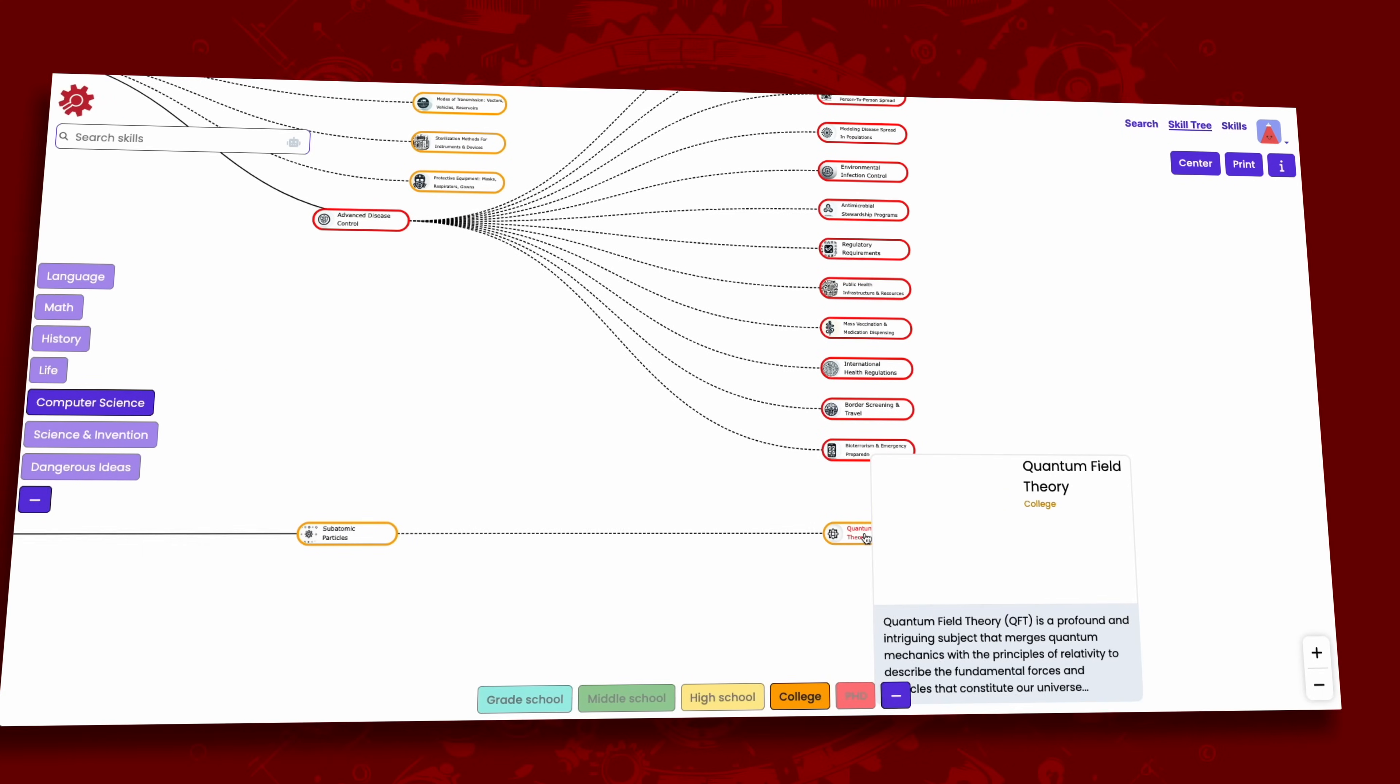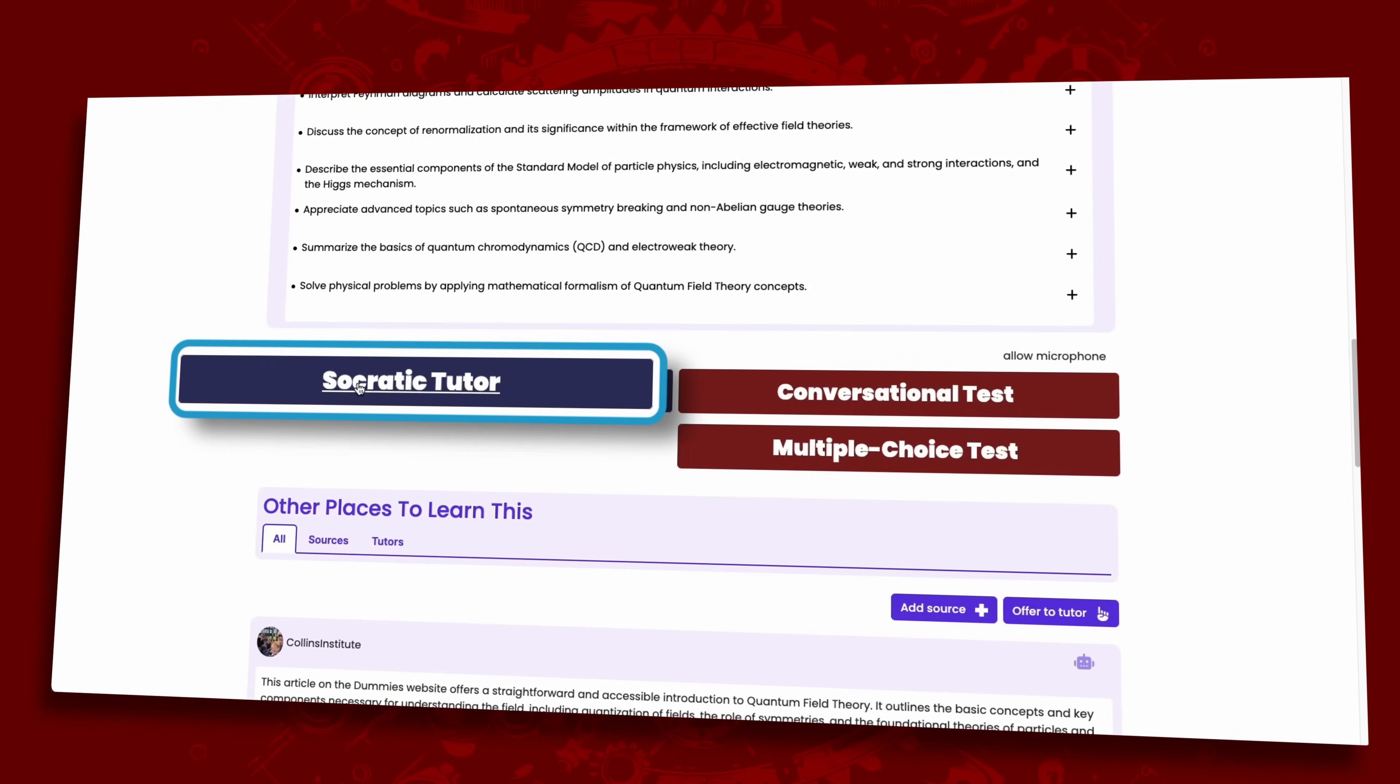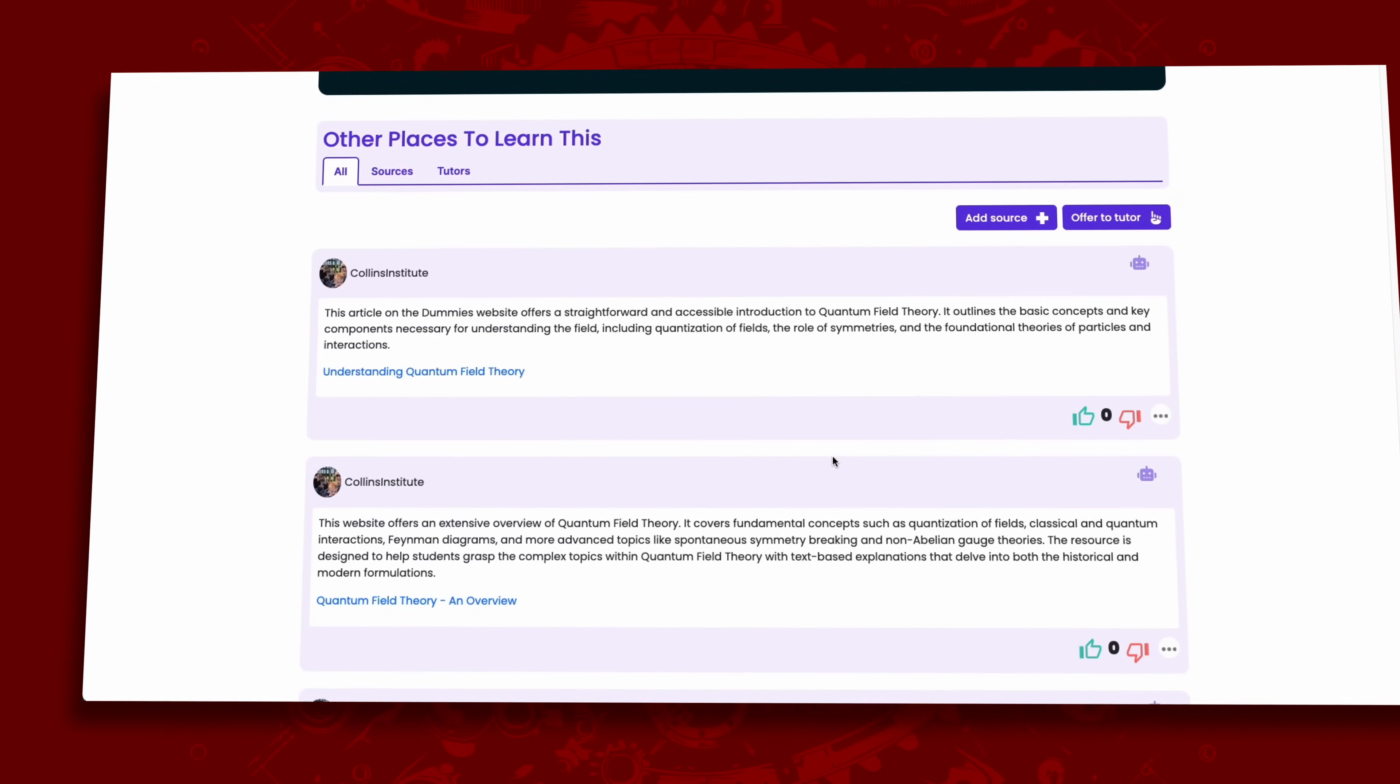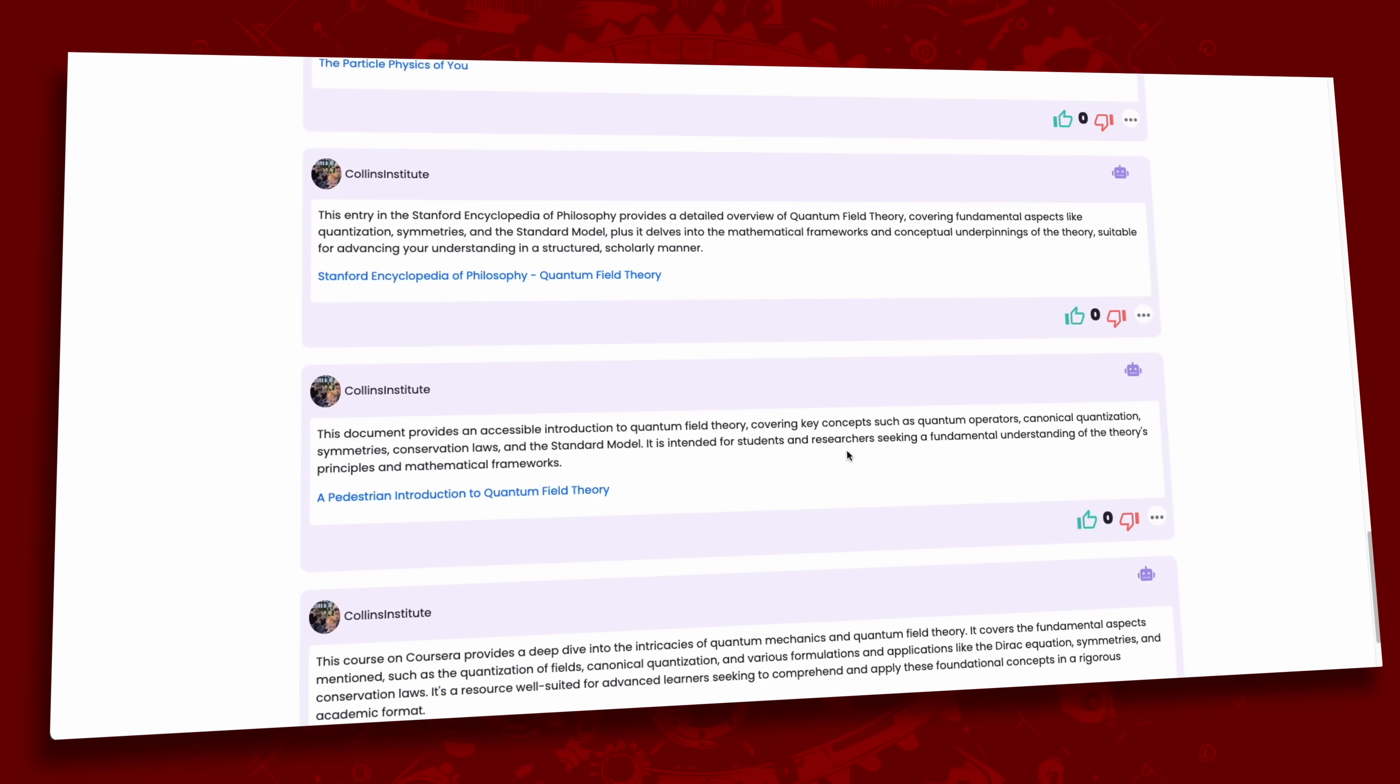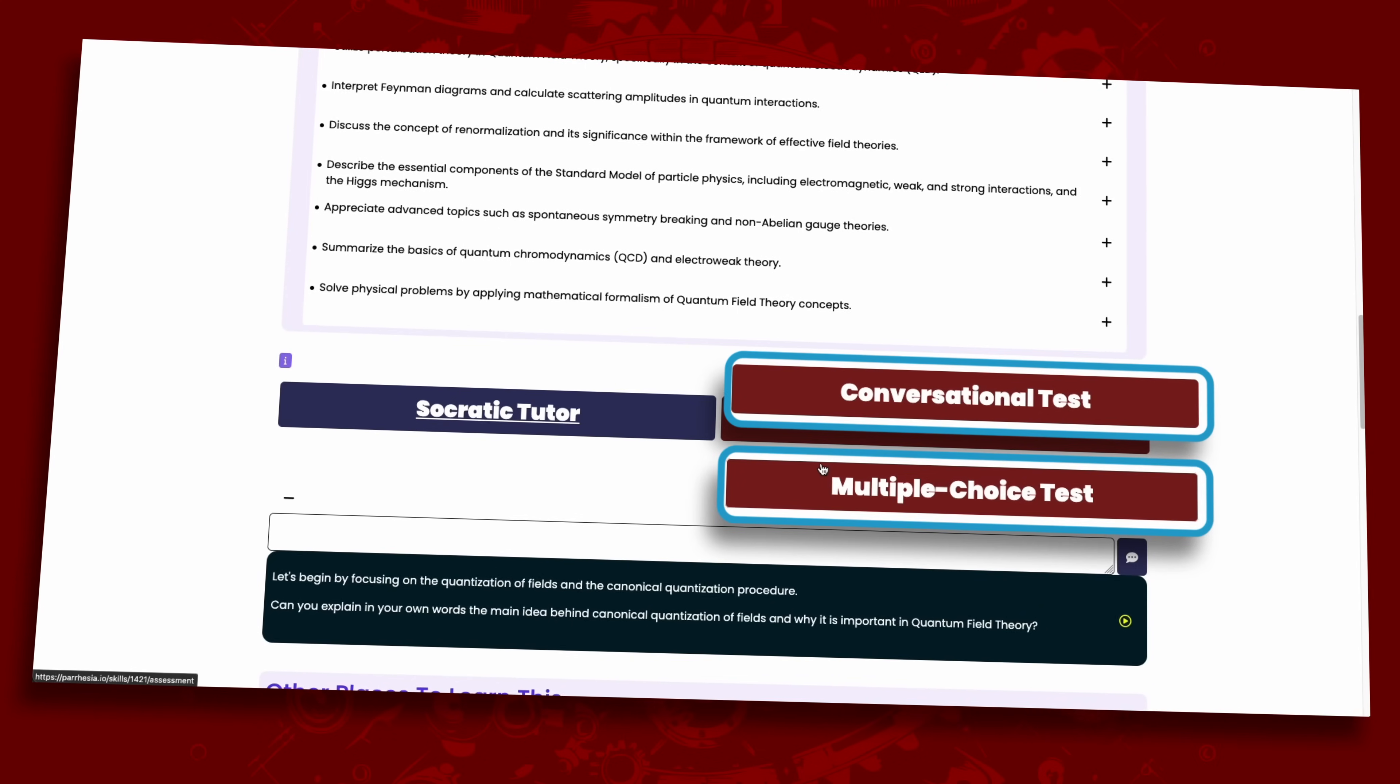Each node contains a description of the topic, a series of AI tutors for each learning objective, a Socratic tutor to better understand the subject in general, and a Reddit-style list of the best places to learn about said topic that any student can add to or vote on. When a student wants to test themselves on a particular node, there's both a conversational AI and a multiple-choice test.